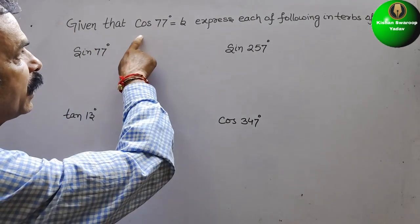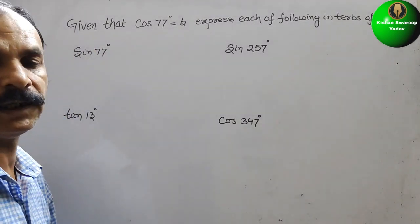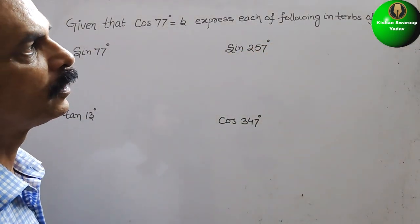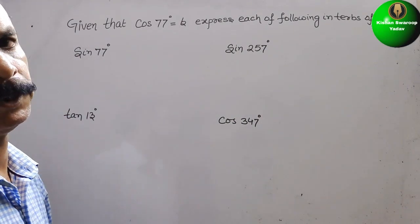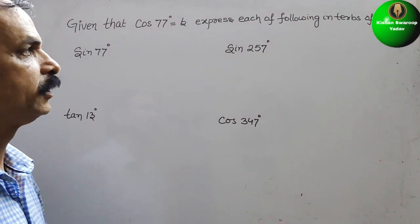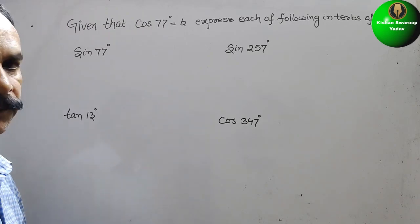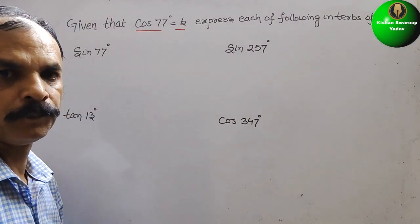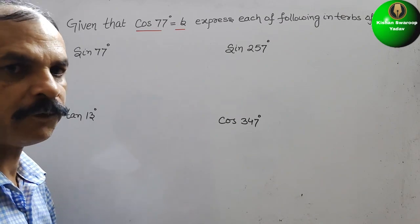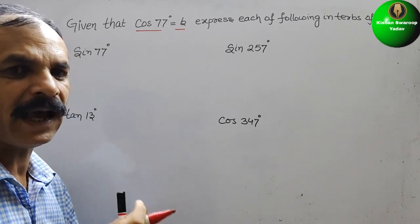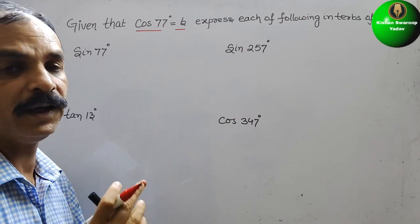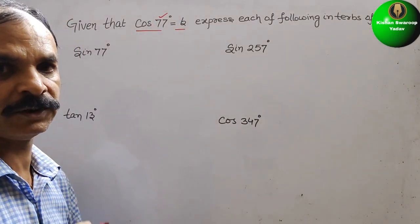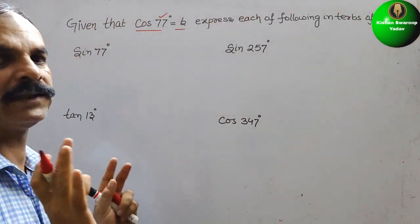The question is: given that cos 77° is equal to B, express each of the following in terms of B. What we have to do is convert each and every angle into 77°, in terms of 77° first. Then only we will get the answers.